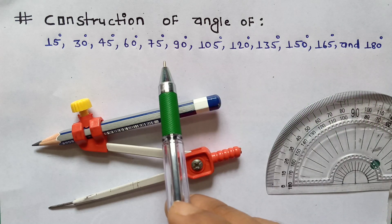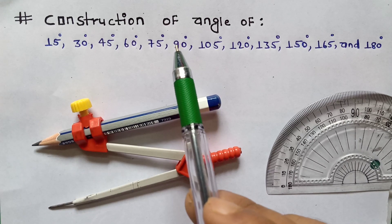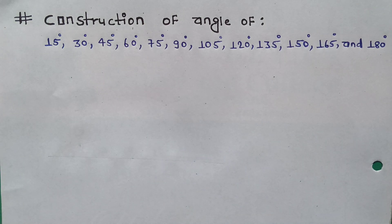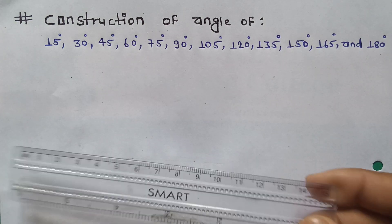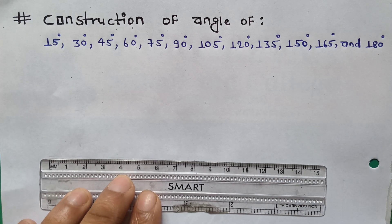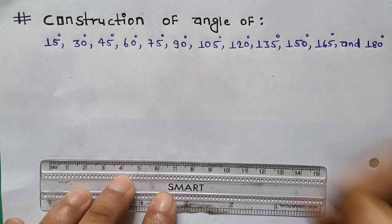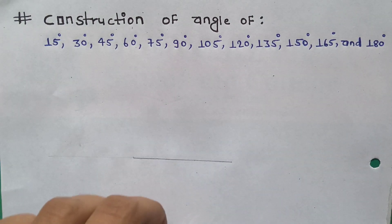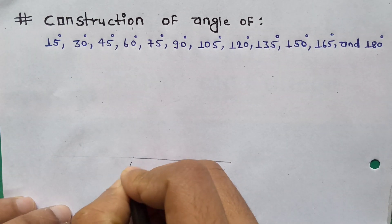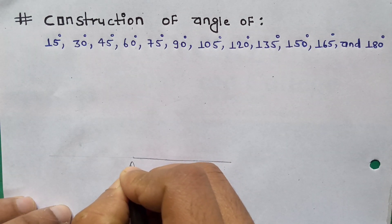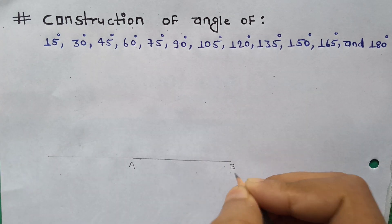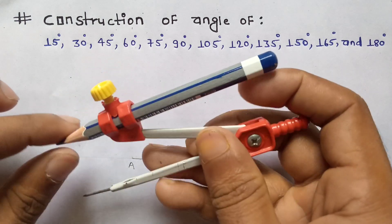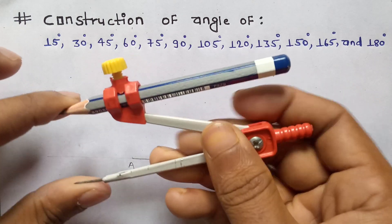Now I am going to start. First of all, I am going to draw a horizontal line with the scale. I am taking the horizontal line — you can take it too. Now I name this point A and point B. Fix your compass with a proper radius. I am fixing it now.